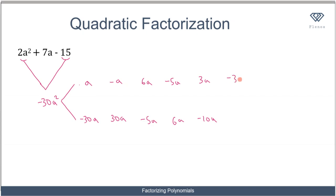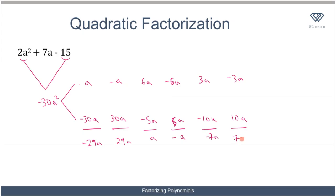We can also try 3a and minus 10a, or minus 3a and 10a. Summing these pairs: a + minus 30a gives minus 29a; minus a + 30a gives 29a; 6a + minus 5a gives a; minus 6a + 5a gives minus a; 3a + minus 10a gives minus 7a; and minus 3a + 10a gives 7a. The pair that multiplies to minus 30a squared and sums to 7a is minus 3a and 10a.